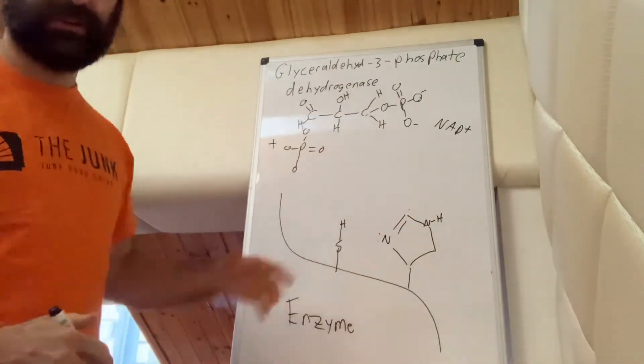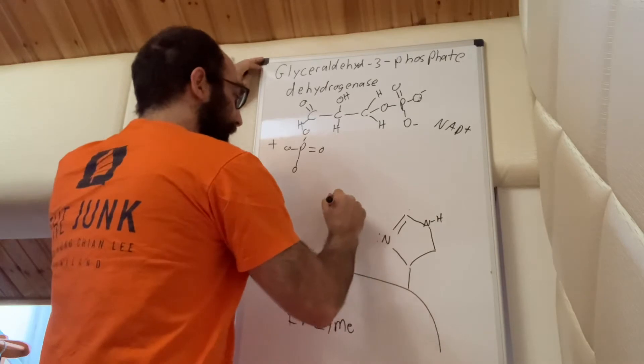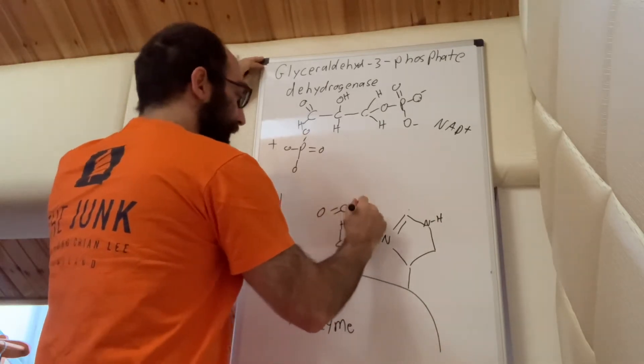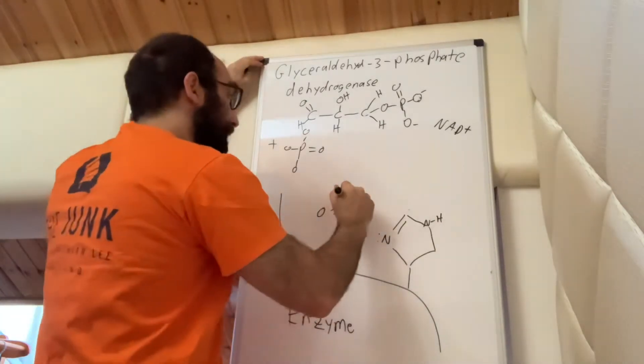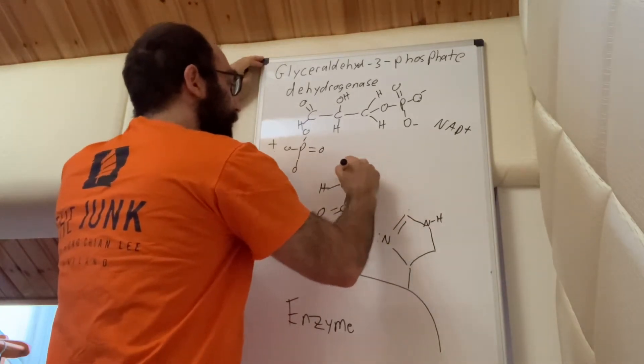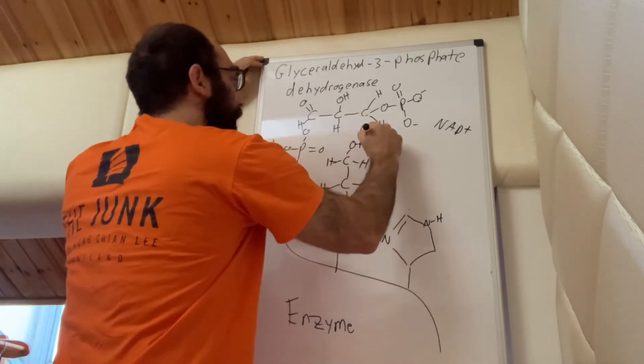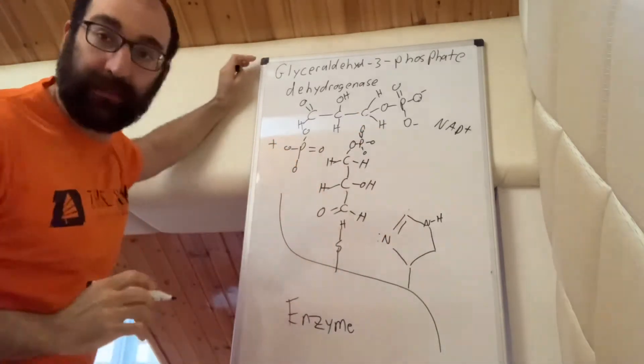So the first step, what needs to happen is the glyceraldehyde needs to line up in here. So I'm gonna put this carbon here with its oxygen and its hydrogen. This is the one carbon. Then we're gonna have the second carbon with a hydrogen and then the OH group, and then the third carbon with its hydrogen and its hydrogen and its O-P-O-O-O.